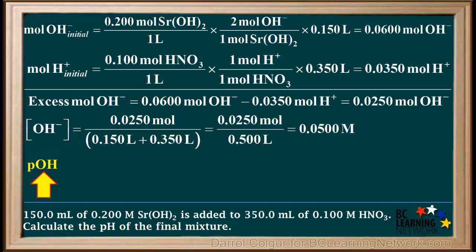Because we have base in excess, we can calculate the pOH, which is the negative log of the hydroxide ion concentration, or the negative log of 0.0500, which comes out to 1.301. None of our data or calculations in this problem have less than three significant figures, so the pOH has three significant figures, or three decimal places.